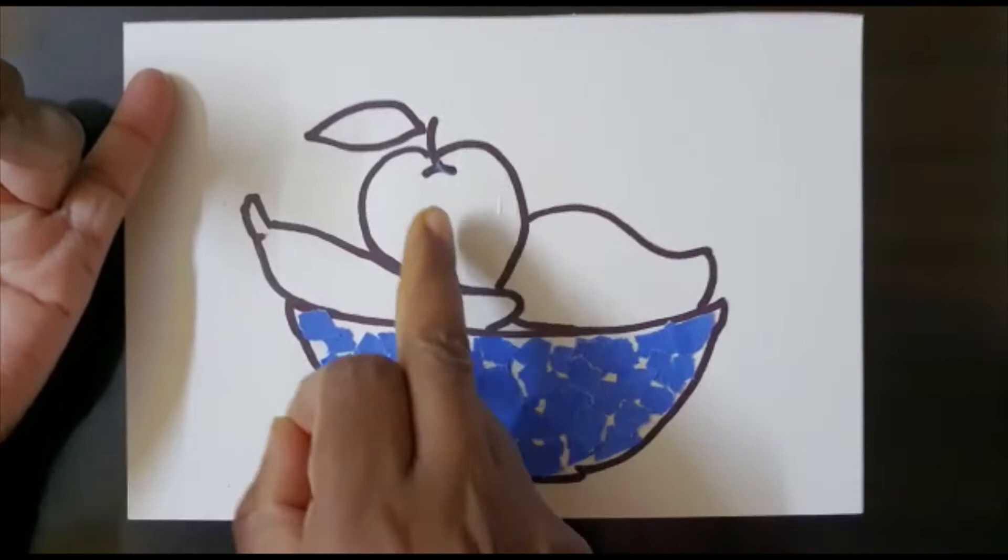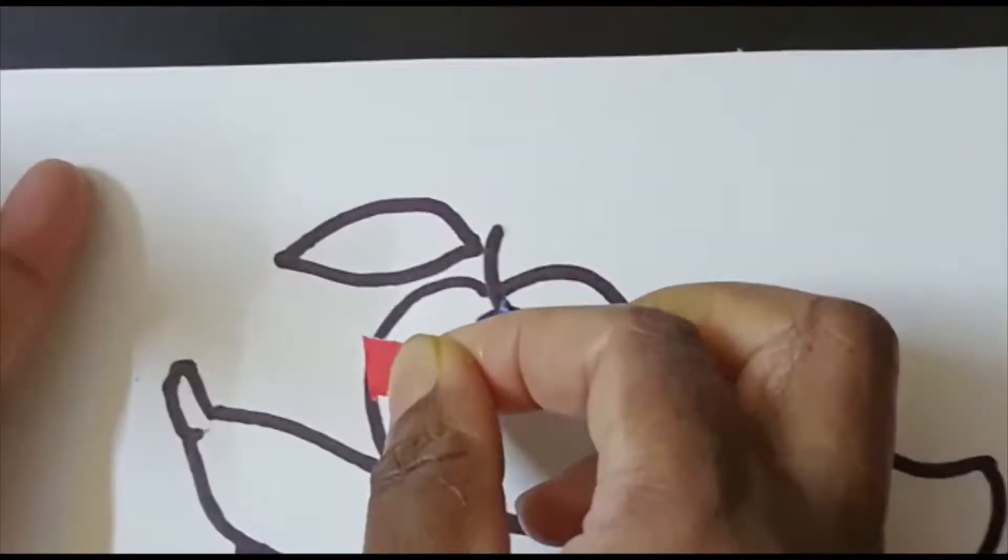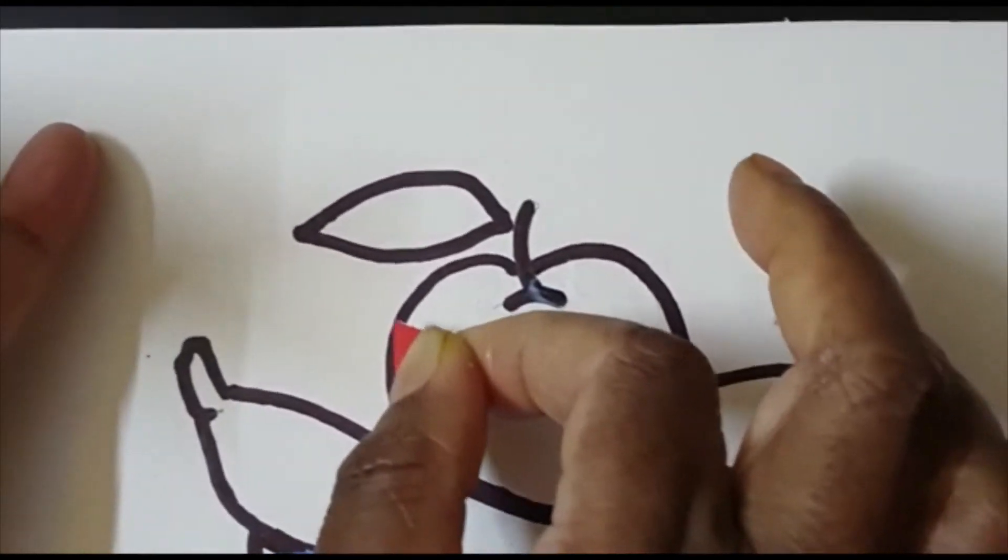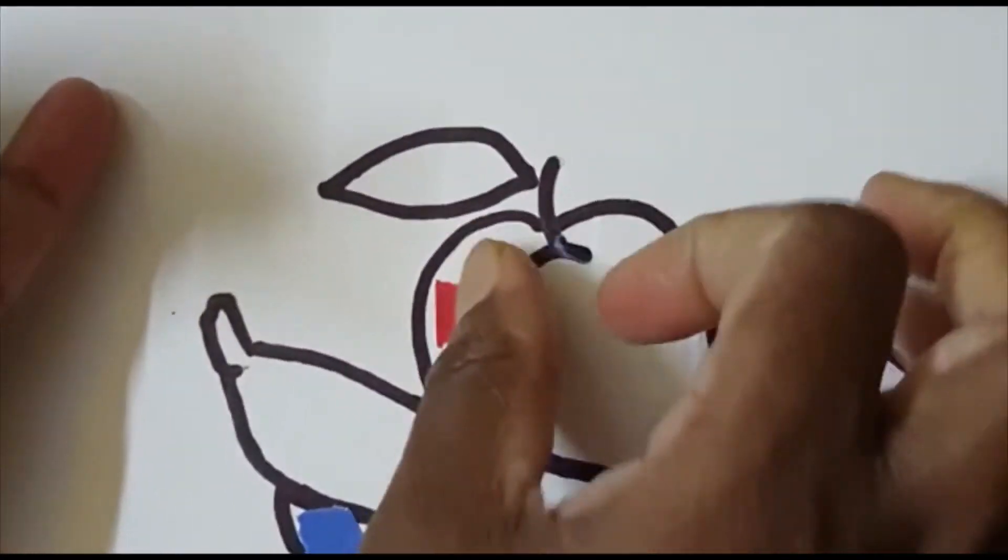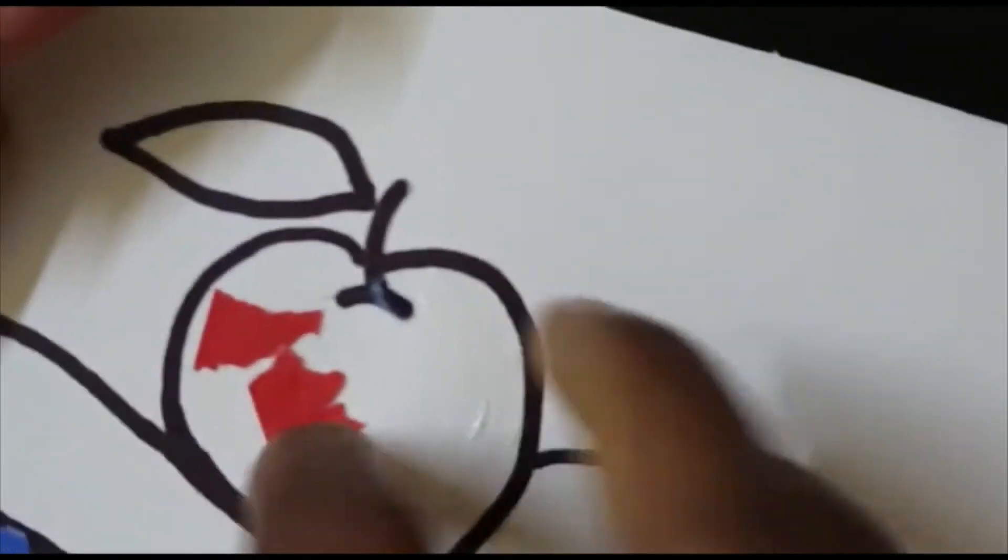Now this portion is done. I will be doing the apple, so I will be pasting red pieces. I have applied fevicol and now I will be pasting these pieces over this picture to fill it completely.